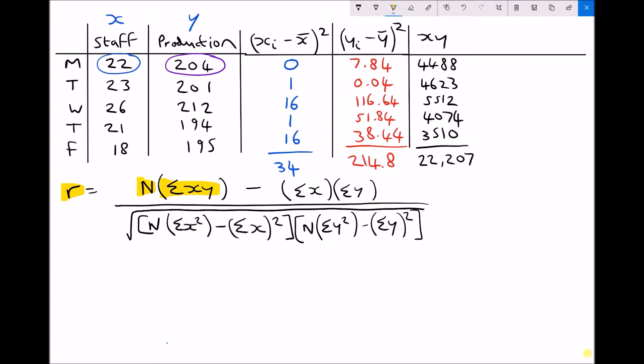If we revert back to our formula, the next two terms on the top of that fraction are the sum of x, which is all of the x items of data added together, and sum of y, which is all of the y items of data added together. So if we refer to our x column, all we need to do is add all of those number of staff up. So we have 22 plus 23 plus 26 plus 21 plus 18 and that equals 110. And adding up our production values or the sum of y we get 1006.